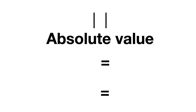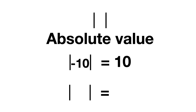You can use absolute value symbols to make negative numbers to positive numbers. For example, minus 10 with the absolute value symbol, you can make to 10. And positive 10 is just 10.